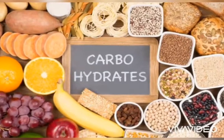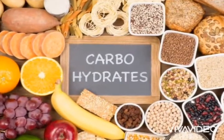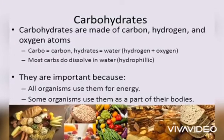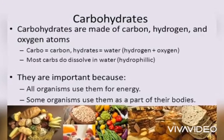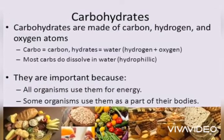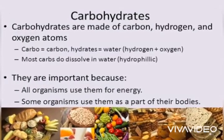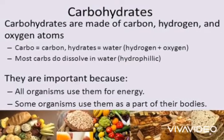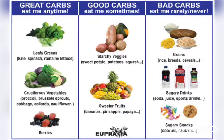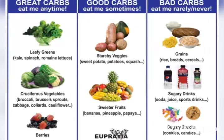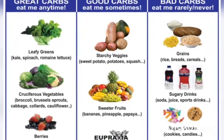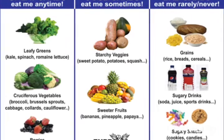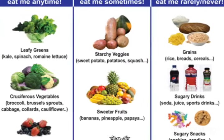The first nutrient is carbohydrates. Carbohydrates are made of carbon, hydrogen, and oxygen atoms, and they give us energy. These are some examples of good carbohydrates and bad carbohydrates.